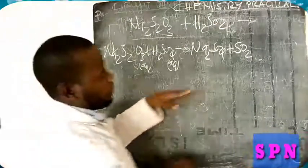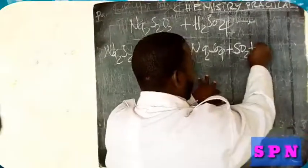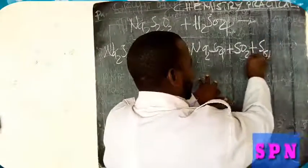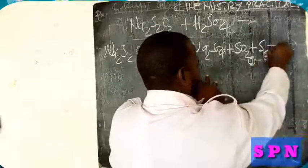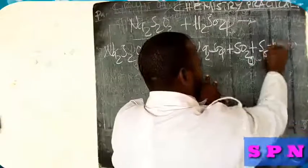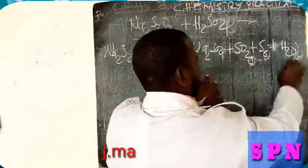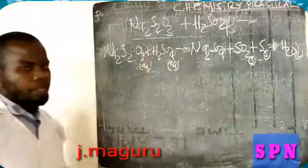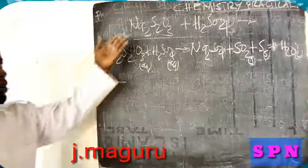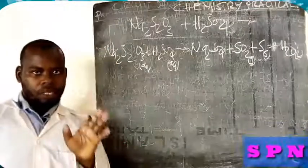Then after, sulfur dioxide is going to form precipitate, and we get water. That is the reaction between sodium thiosulfate and sulfuric acid.